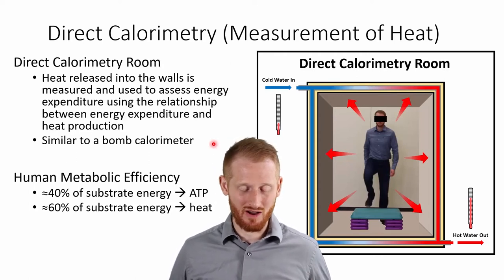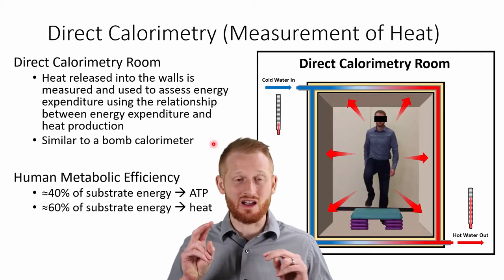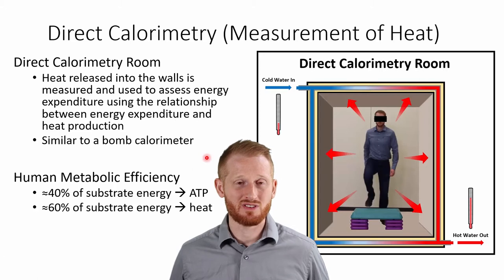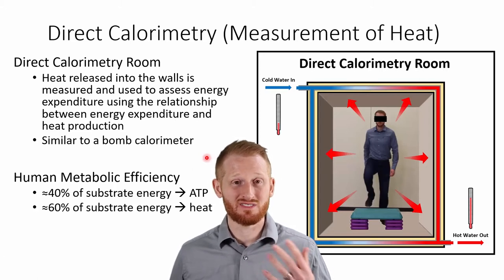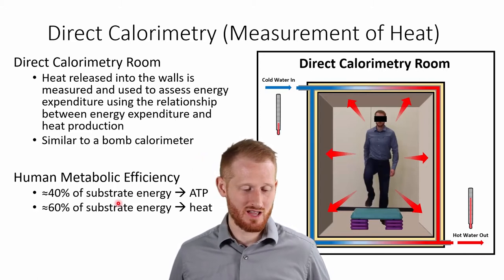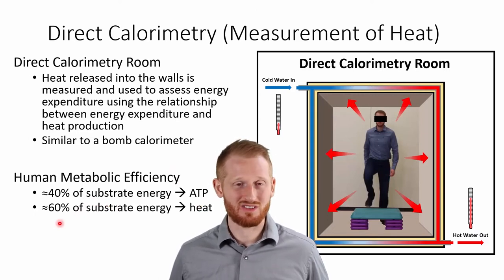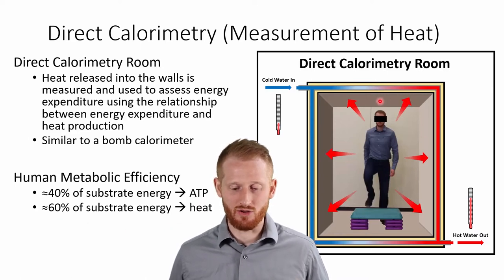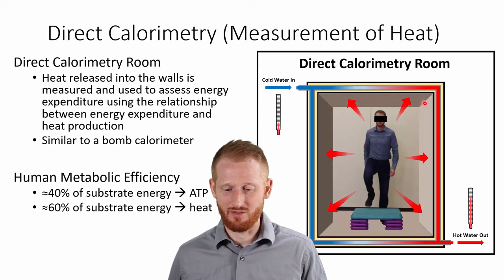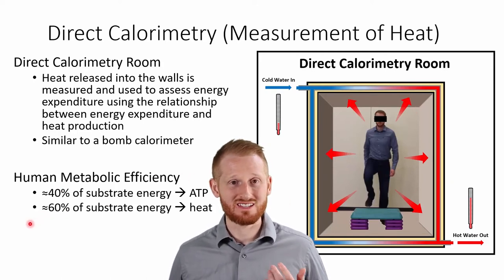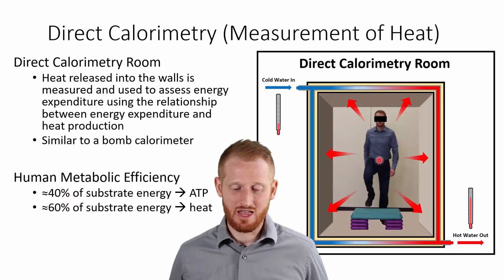This is how we can directly measure the energy expended by the body, which is why it's called direct calorimetry. The body has a fairly stable ratio of how much energy is dissipated as heat versus useful energy: about 40% of our energy turns into ATP, which is our useful energy, while 60% turns into heat — which is what heats up the water we measure.